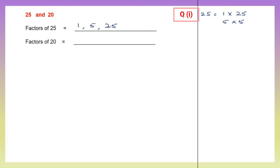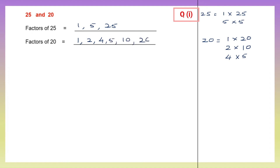Factors of 20: 1 into 20 is 20, then 2 tens are 20. What else will give us 20? 4 fives are 20. That's it. So the factors of 20 are 1, 2, 4, 5, 10 and 20.